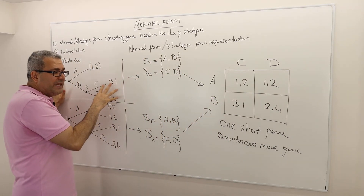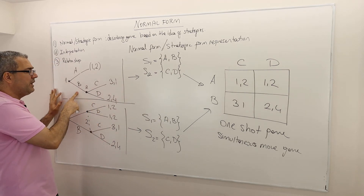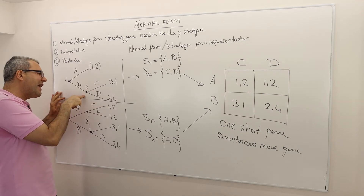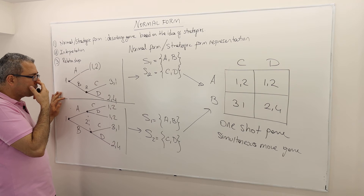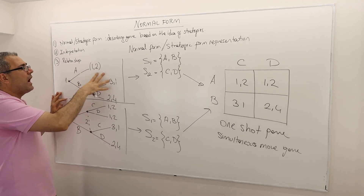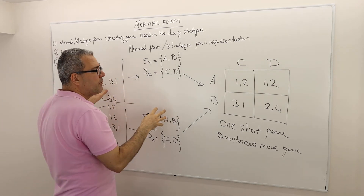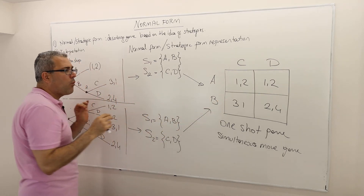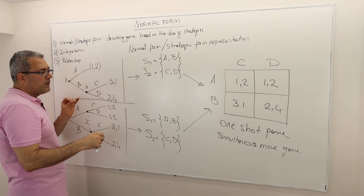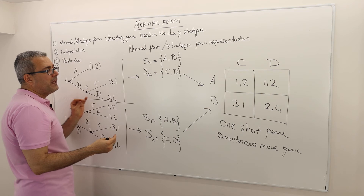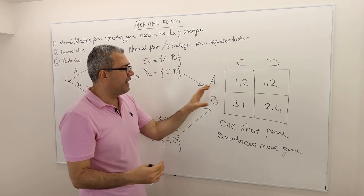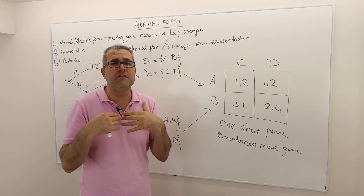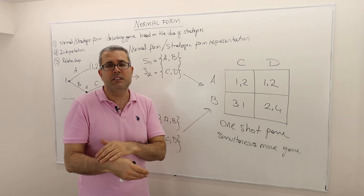However, the original game does not need to be a simultaneous move game. For example, in the first game tree, the first player moves first and then the second player moves — that's not really simultaneous. Whether the strategic outcome of these two game trees is the same is a separate discussion. But sometimes the strategic environment itself is literally a simultaneous move game, and that's when it makes sense to analyze the strategic form directly.